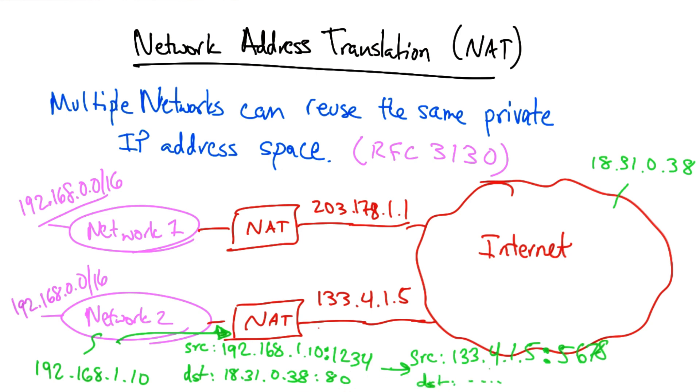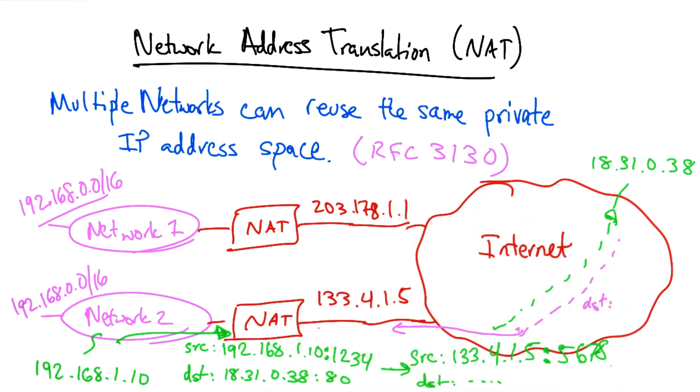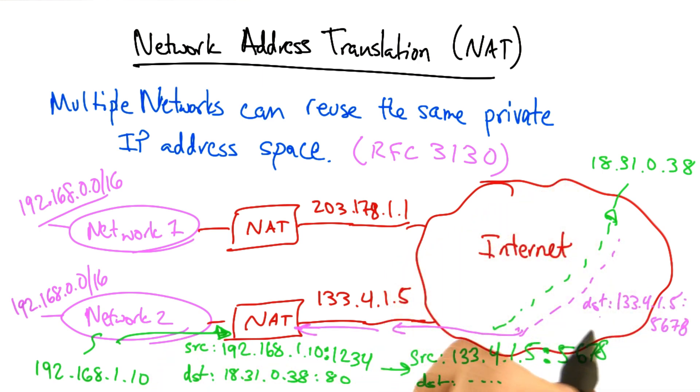And the destination will remain the same. That packet will make its way to a global destination, and the reply will make its way to the globally reachable IP address on the corresponding port.